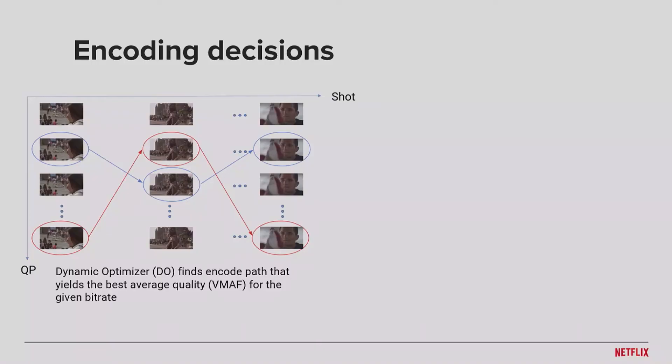I introduce the next topic, which is the encoding decision optimization using VMAF. We came up with this particular framework we call Dynamic Optimizer. What it does is we can process video encoding on a per-shot basis. For each shot, we have multiple encodes. We collect their bit rates and their quality in terms of VMAF. And this Dynamic Optimizer, DO, will be able to find the best encoding path that will give the best average VMAF quality for a given bit rate.